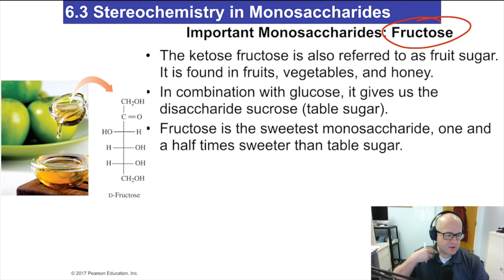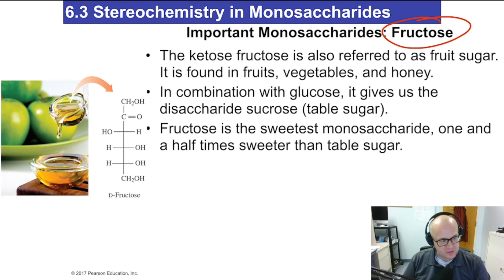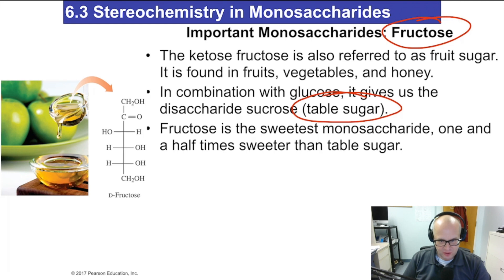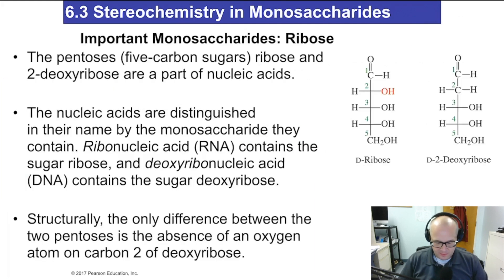Fructose is another common monosaccharide — you've all heard of high fructose corn syrup, a common sweetener in almost everything these days. Fructose is the other sugar found in sucrose — fructose and glucose make sucrose — so fructose is a major component of table sugar. It is the sweetest of all the monosaccharides, which is why it's used for sweetening: because it's so sweet, they don't have to use as much, making it cheaper.